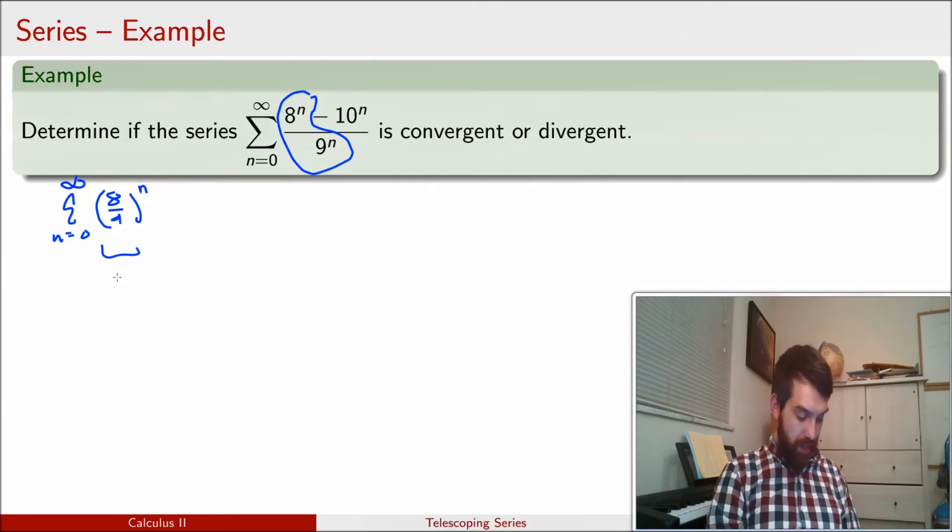Now, this is a ratio, this 8 ninths, and it has magnitude less than 1. Therefore, by geometric series, it is going to converge, and more importantly, it converges to a value 1 over 1 minus 8 ninths, which is the same thing as 9.